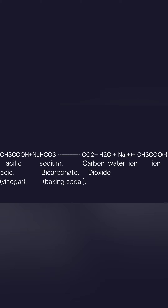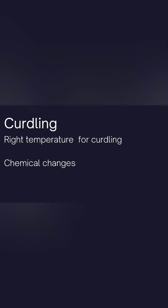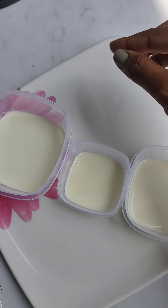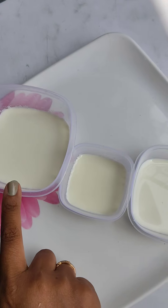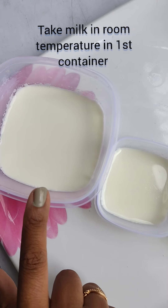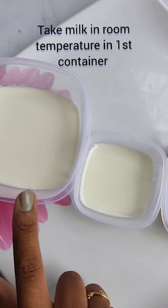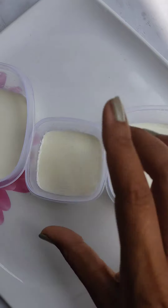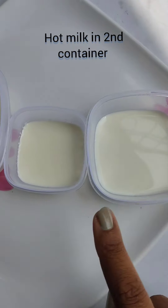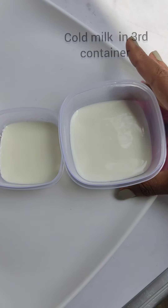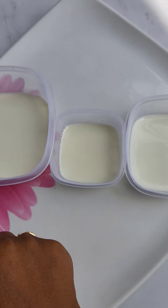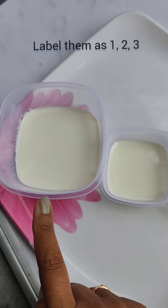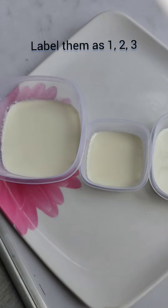Let's switch to the next experiment — curdling. It means changing milk to curd, and it is also a chemical change. To change milk to curd, we need to maintain a proper temperature. Take milk at room temperature in the first container, hot milk in the second container, and cold milk in the third container, and label them 1, 2, and 3.